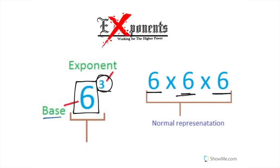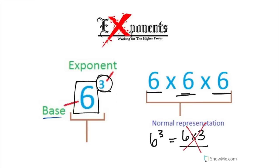A very common mistake that kids make is they automatically assume that if they see six to the third power, they want to do six times three — and that is wrong. Please do not make that mistake. I always encourage you to show your work.